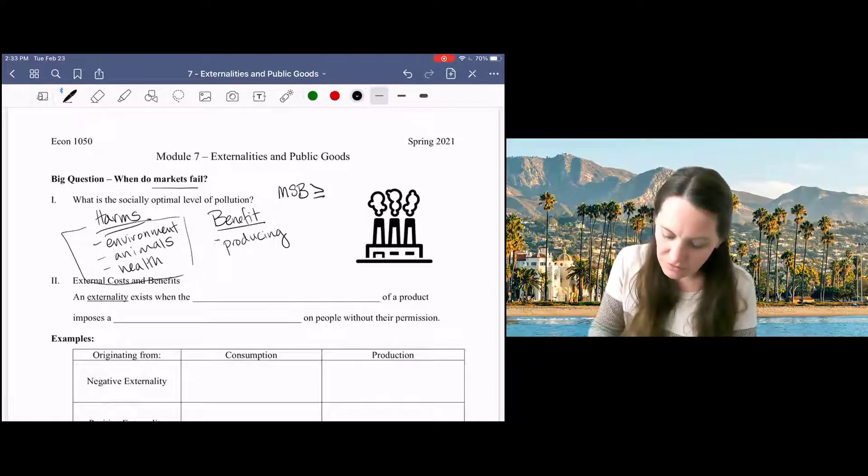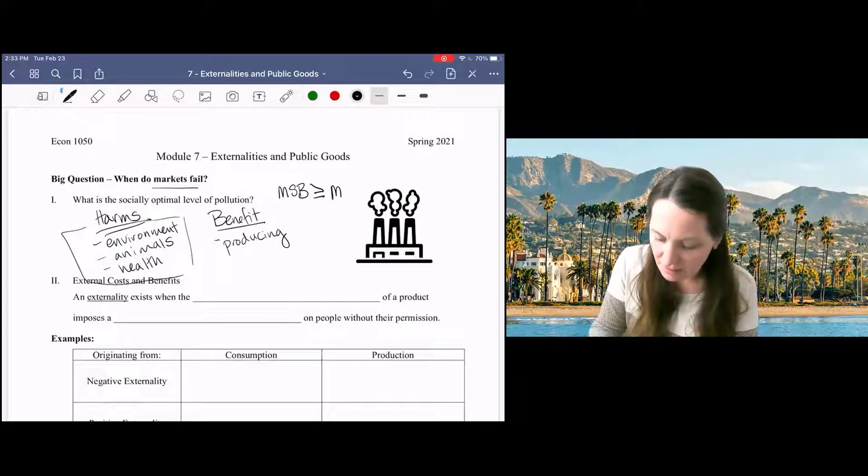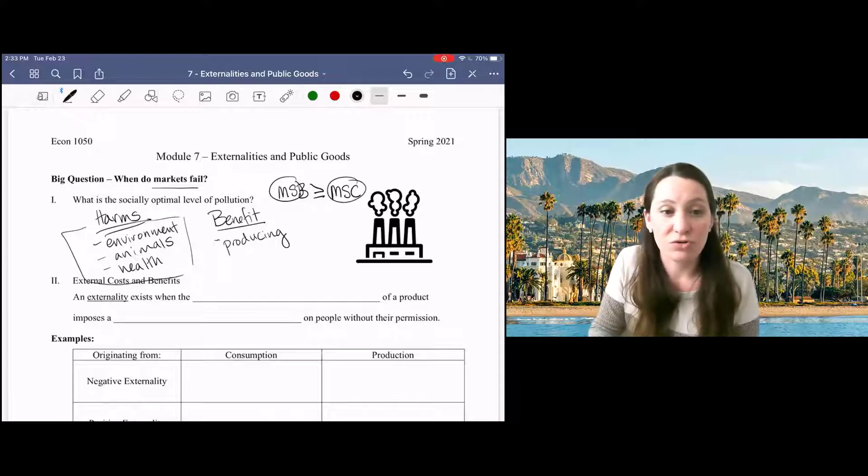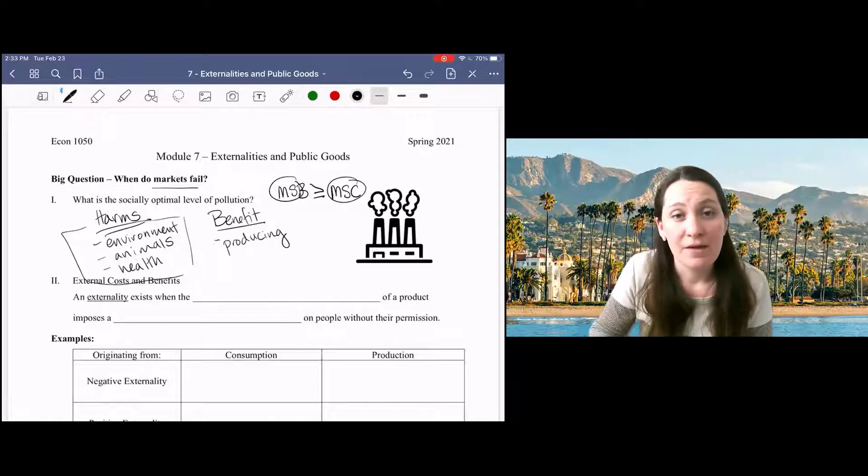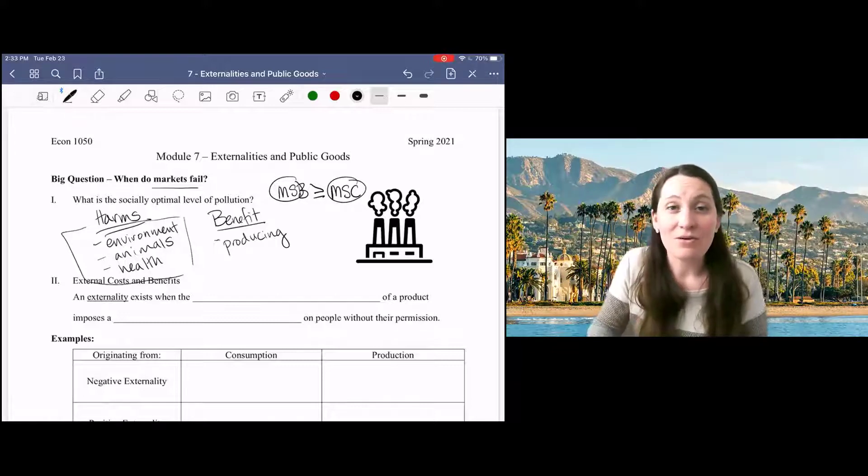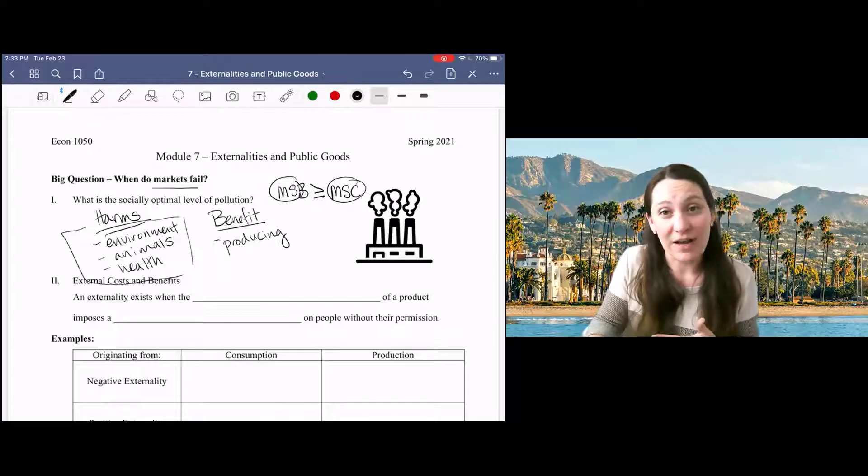Instead, we should compare the marginal social benefit of pollution to the marginal social cost and in that way, take into account the full cost of our actions and achieve an outcome that is best for society.